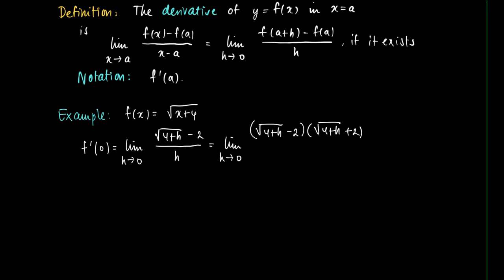We may do this if we correct for the same factor in the numerator. So we get h times the square root of 4 plus h plus 2.